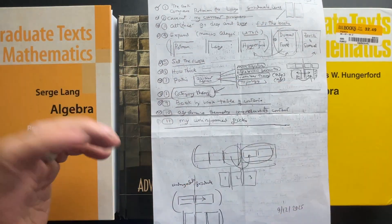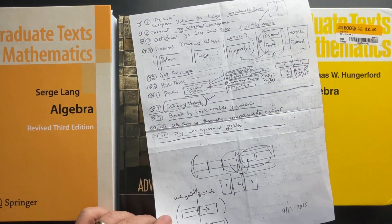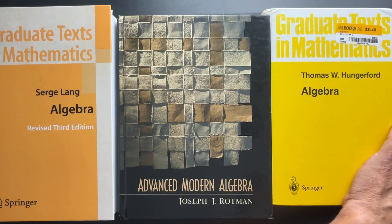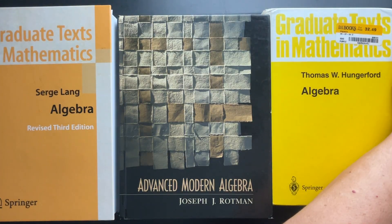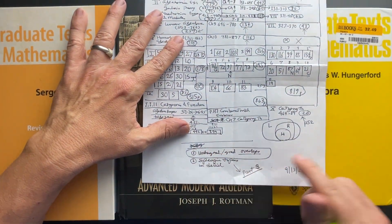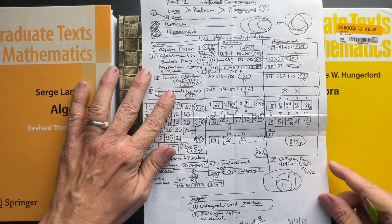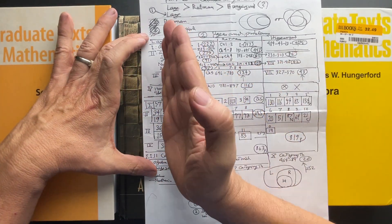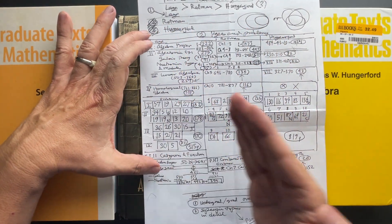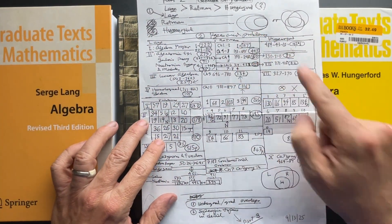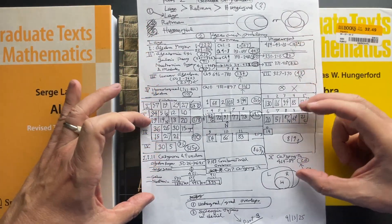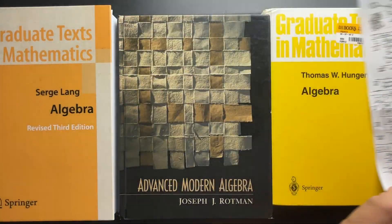But at the end of that video, I realized that I had not shown the books at all. So I will do that in this video. I will also talk a little bit about the undergraduate books. And then the nuts and bolts of this video is going to be a very rudimentary comparison of pages and problems of the different types of content found in these three books.